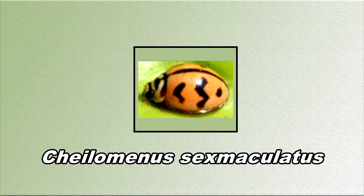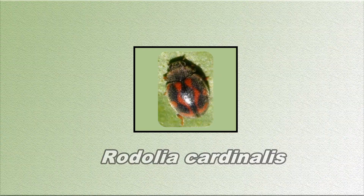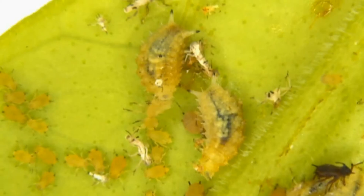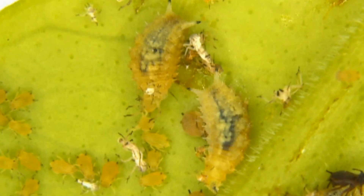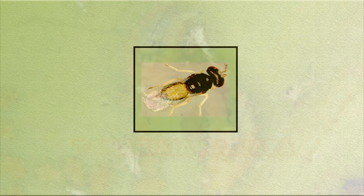Among other predators, coccinellid beetles like Kilomus sexmaculatus, Coccinella septempunctata, Cryptolaemus montrouzieri, Scymnus parcyclosus, Scymna species, and Rodolia cardinalis are found under natural conditions in the citrus ecosystem. Syrphids like Ischiodon scutellaris and Allobaccha species larvae feed on soft-bodied insects, particularly aphids, and suck out the body contents.